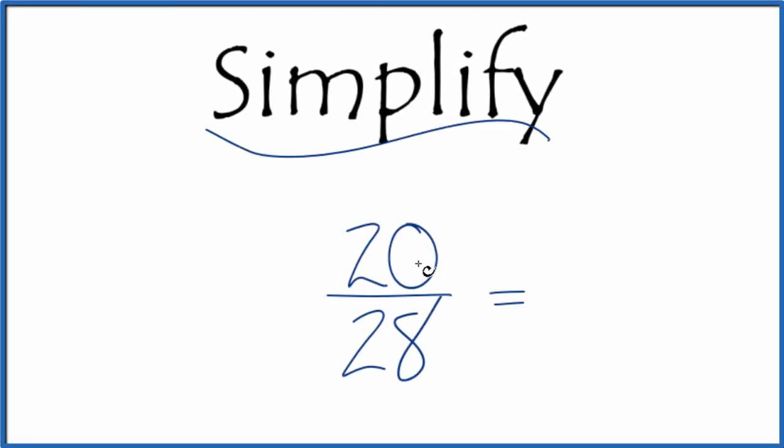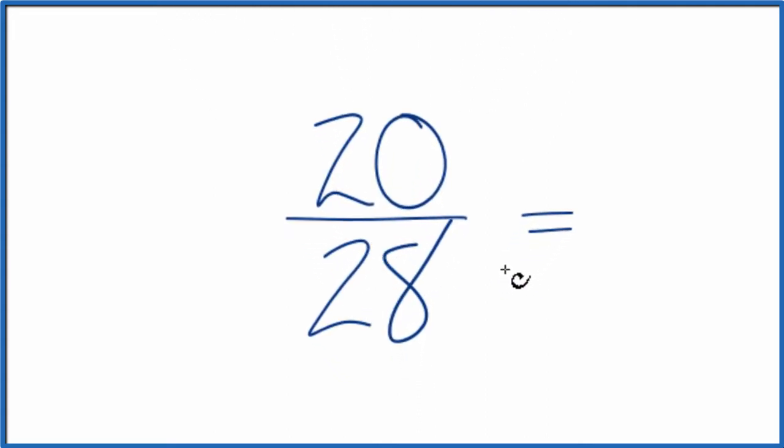If you're asked to simplify 20 over 28, here's how you do it. We're trying to find another fraction that's equivalent, has the same value as 20/28, it's just that it's simplified or reduced to its lowest form.